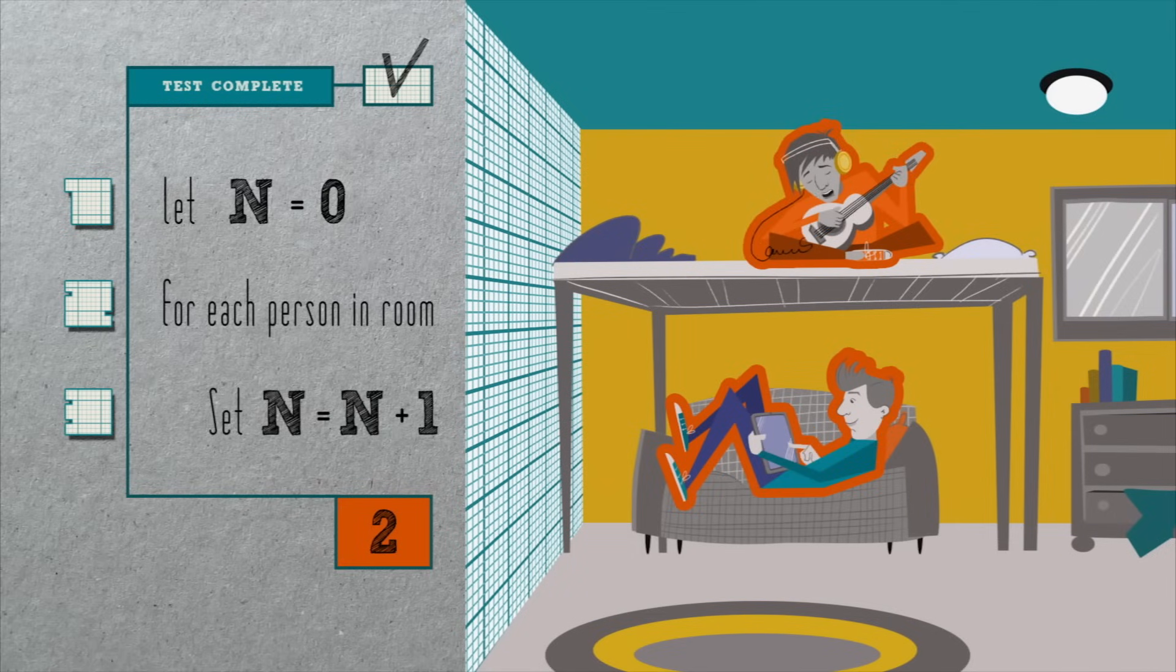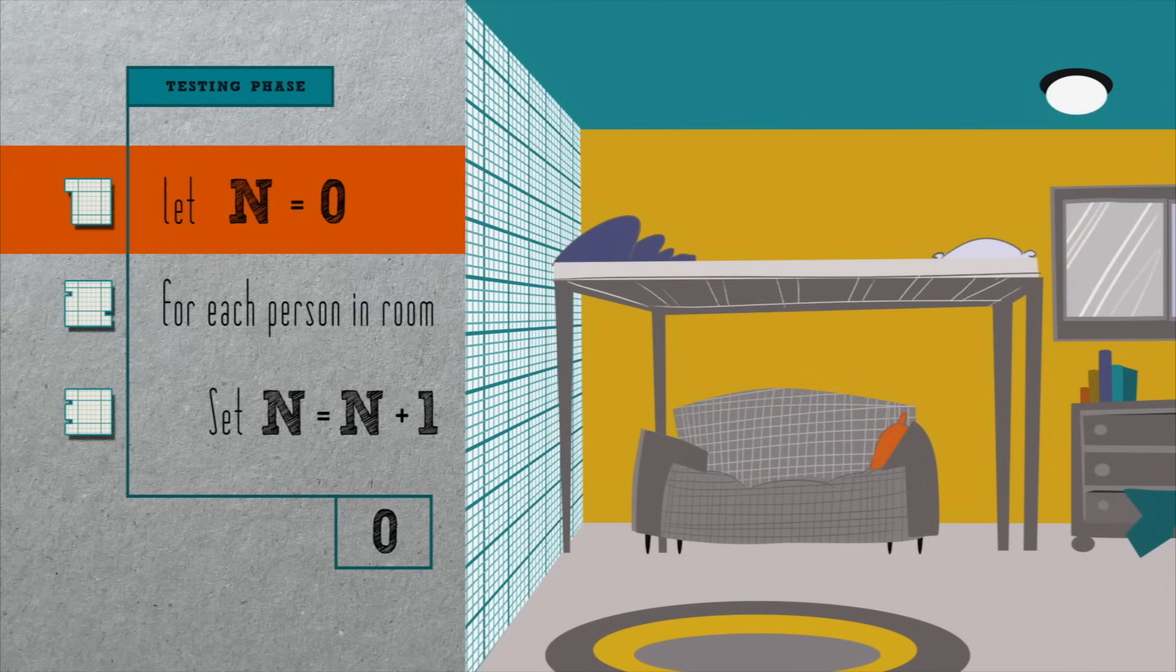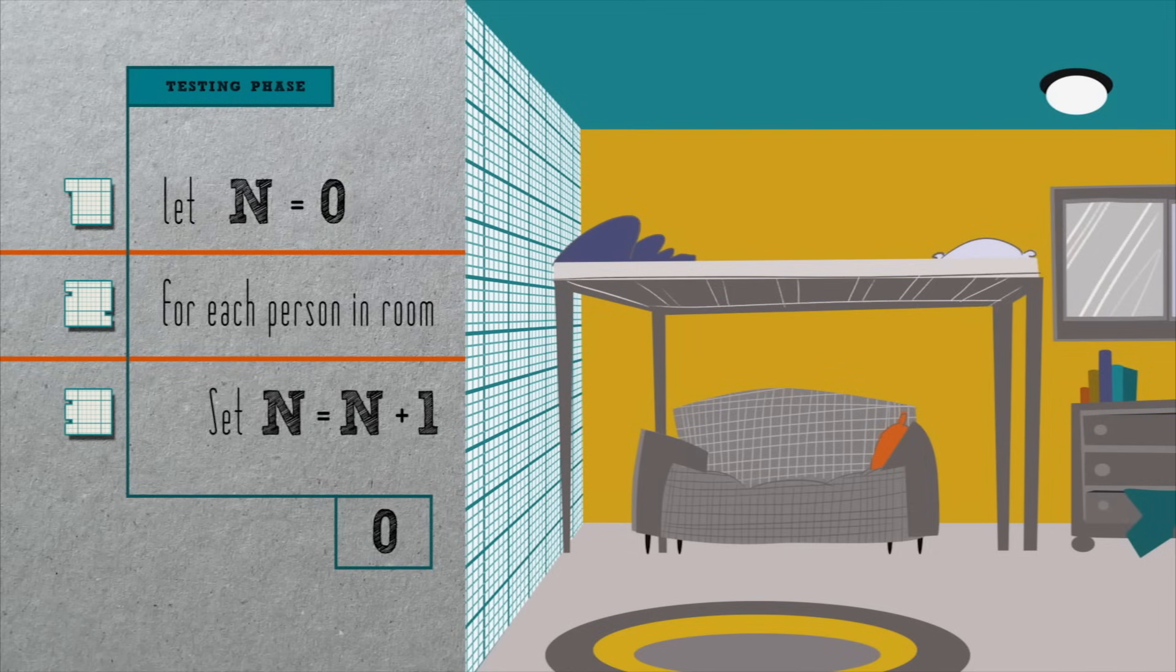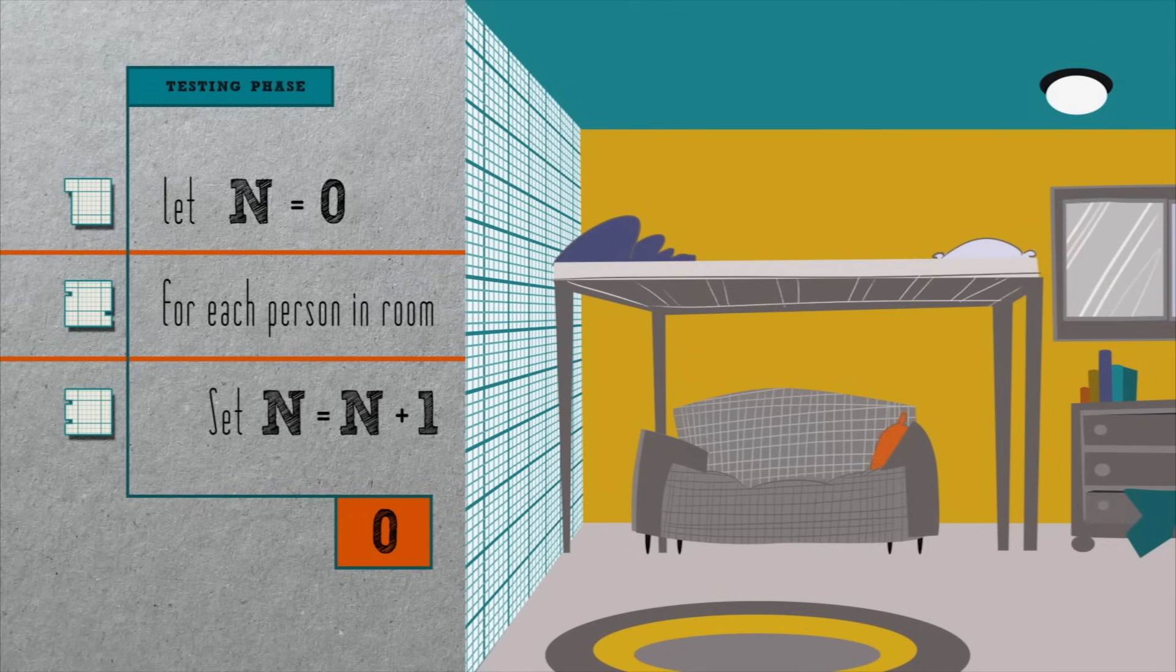How about a corner case, though? Suppose that there are zero people in the room, besides me, who's doing the counting. In line one, we again initialize n to zero. This time, though, line three doesn't execute at all, since there isn't a person in the room, and so n remains zero, which indeed matches the number of people in the room. Pretty simple, right?